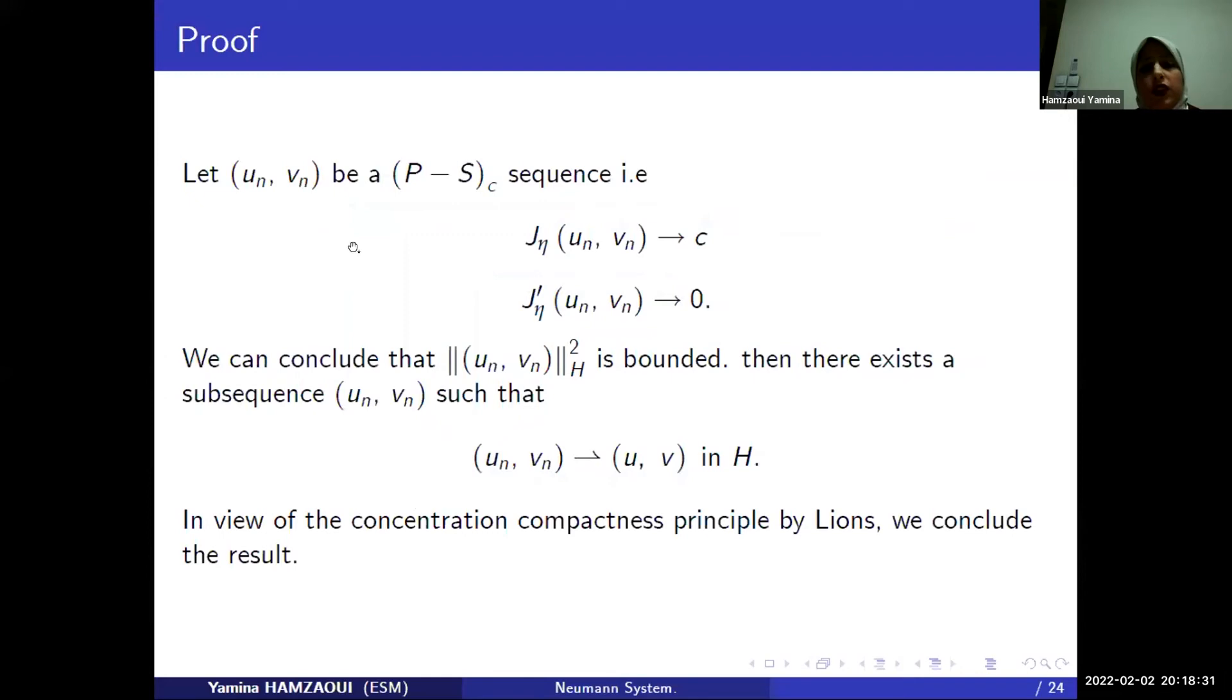For the proof, let U_n, V_n be a sequence of Palais-Smale. Let's verify G eta at this sequence converge by C, so we can conclude that this norm at U_n, V_n is bounded.